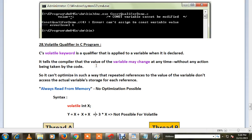that the value of the variable may change at any time without any action being taken by the code. So it means we are informing the compiler don't do any optimization for this particular variable. The compiler will treat this volatile variable in a special way - it does not do any optimization.